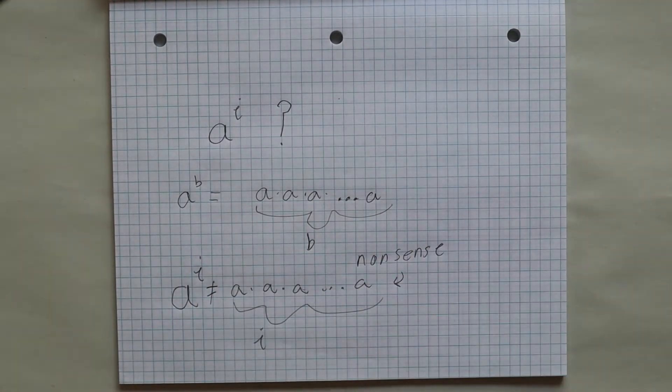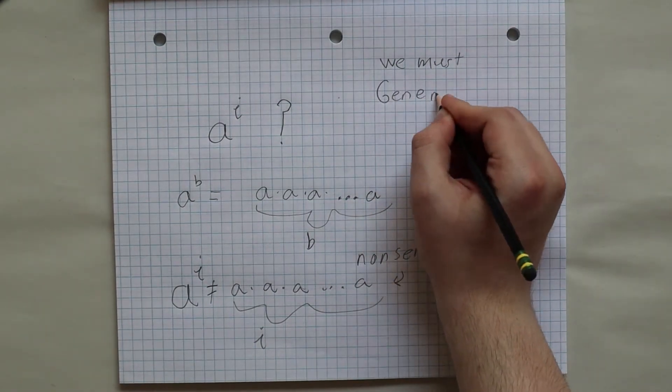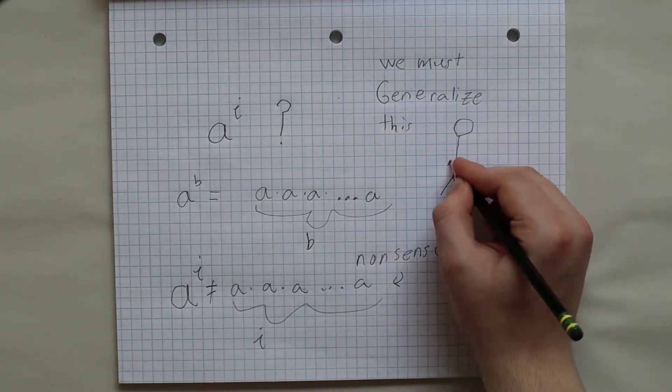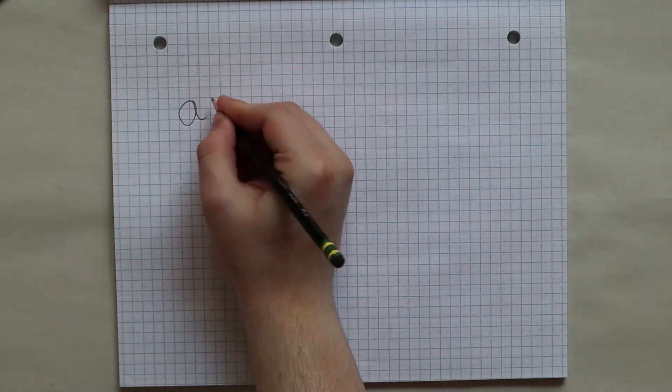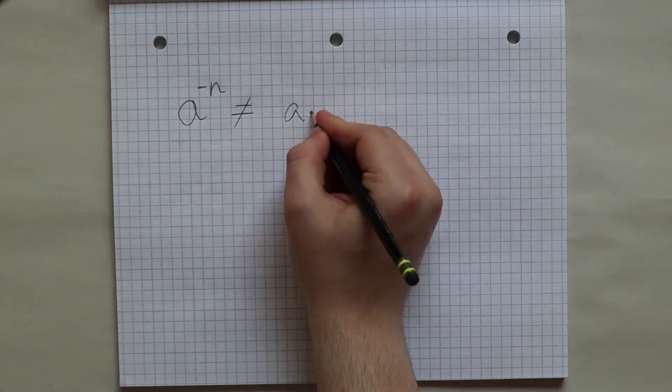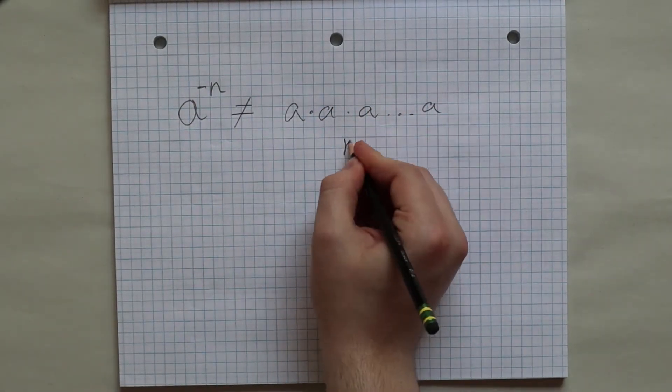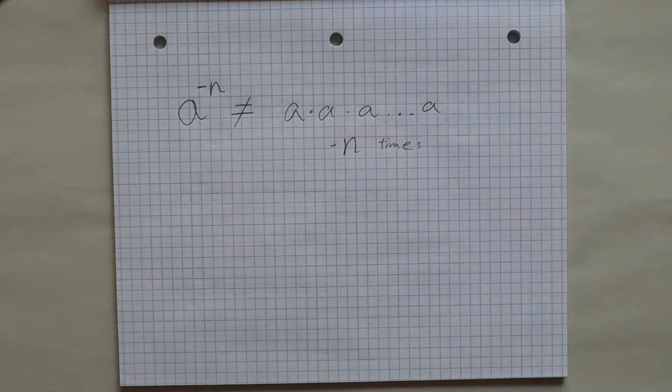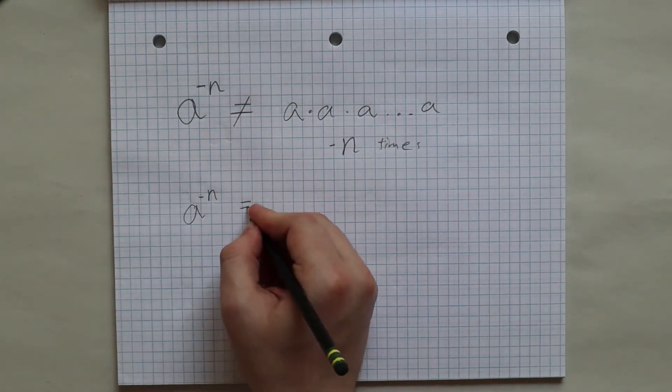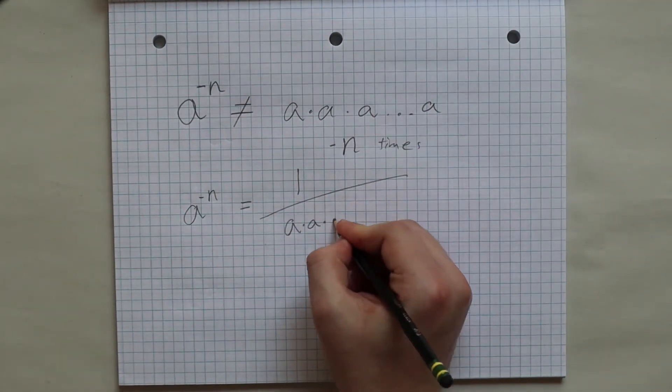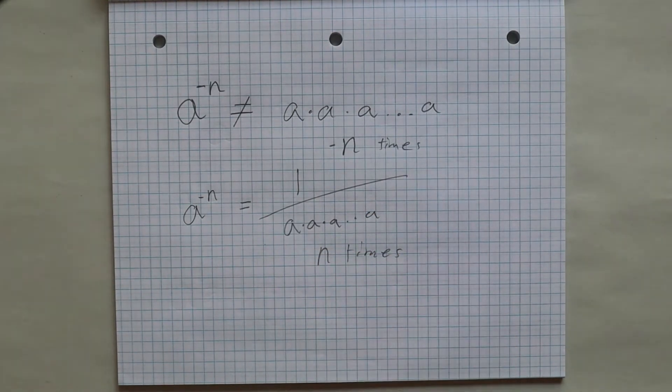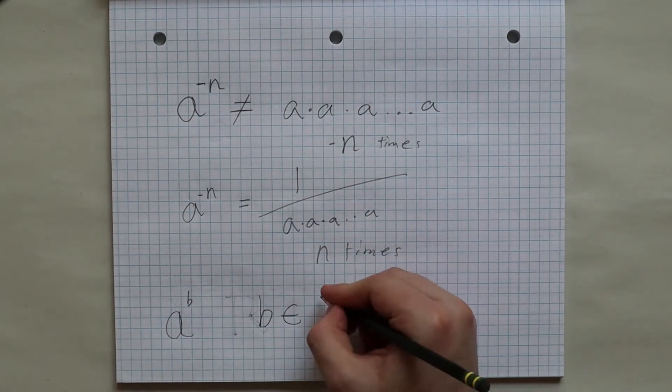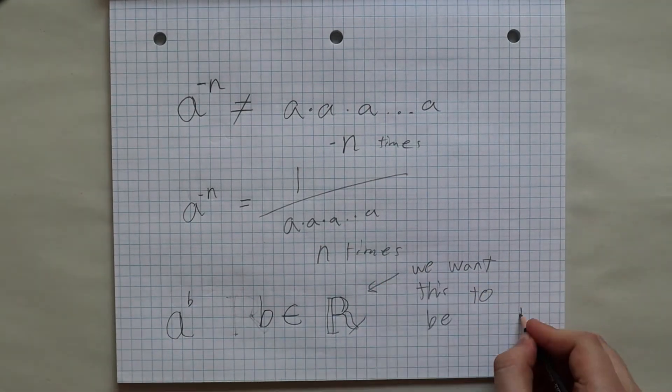This is something we come up against in math all the time. We generalize the definition for exponentiation. We did this when we defined what numbers to a negative power meant. We took the definition and generalized it. So instead of multiplying a number by itself negative n many times, we instead divide one by that number n many times. So how can we generalize exponents from the real numbers to the complex numbers?